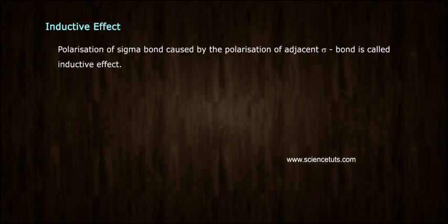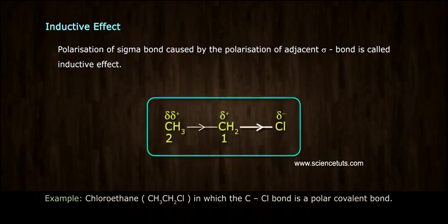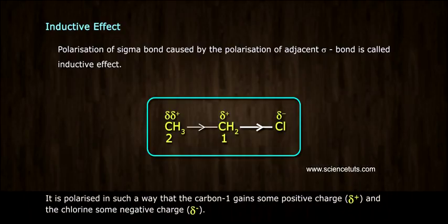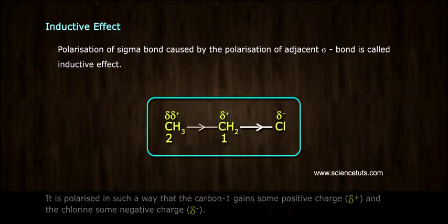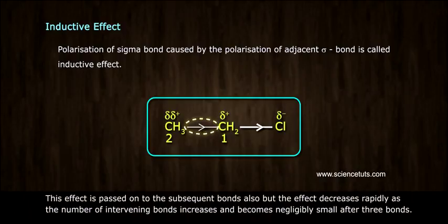Inductive effect. Polarization of sigma bond caused by the polarization of adjacent sigma bond is called inductive effect. Example: chloroethane CH3CH2Cl, in which the C-Cl bond is a polar covalent bond. It is polarized in such a way that the carbon-1 gains some positive charge and the chlorine some negative charge.